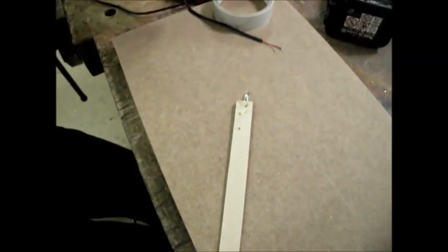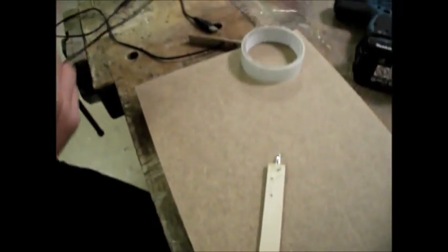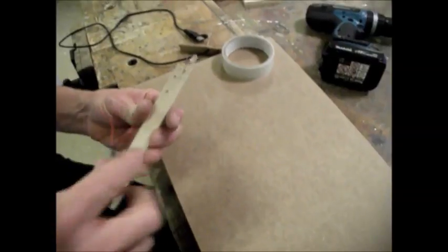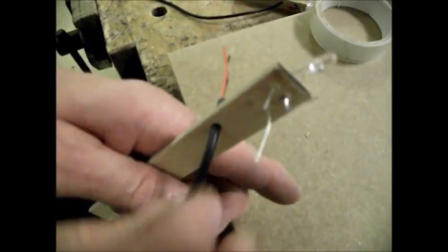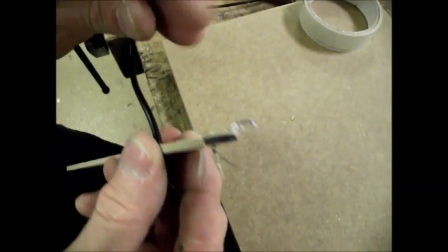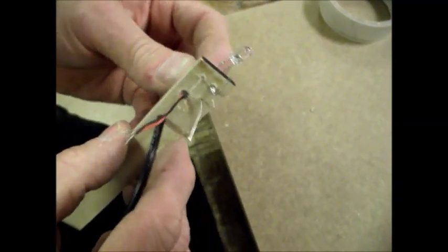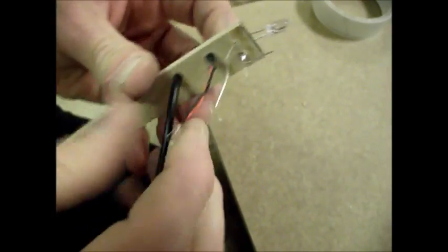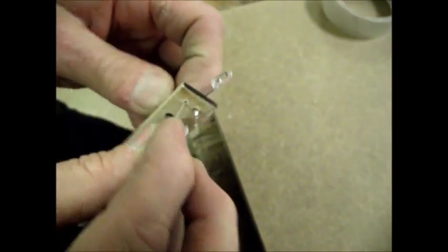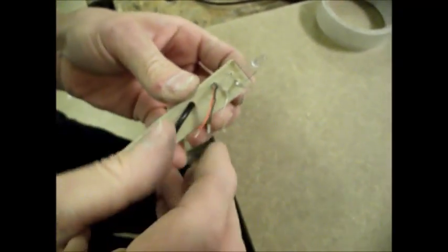Now, the next thing is to put the USB lead through. So poke it through from the same side as the ends of the legs. Push it through and then poke it back, so that it comes out the same side it went in. And that's the side where the end of the resistor and LED legs are poking through.